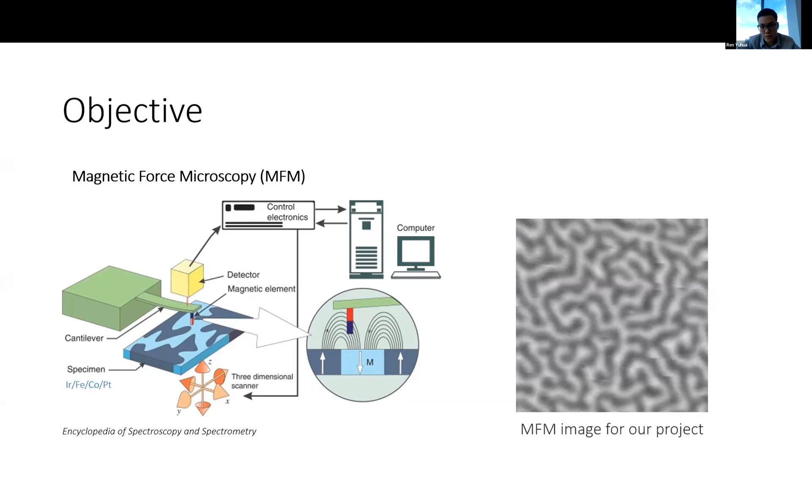On the right here, you will see this MFM image taken in our laboratory. From this image, we can tell that the magnetic texture is some kind of labyrinth stripes. Mainly in this project, we will deal with textures of labyrinth stripes.